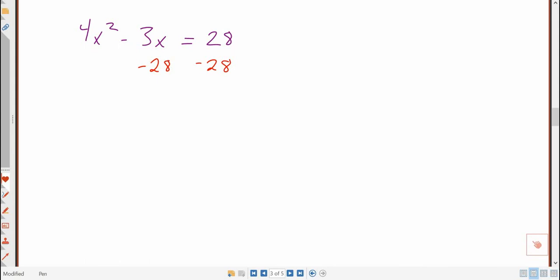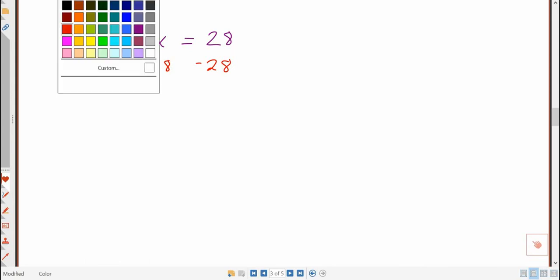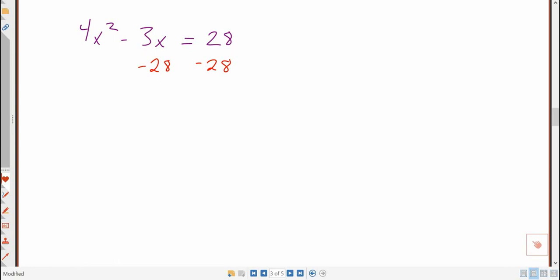Now, be careful. On this left-hand side, when I subtract that, there are no like terms. I can't combine that 28 with either the 3x or the 4x squared because they are not like terms. So I'm just going to have 4x squared minus 3x minus 28 is equal to 0. Now, once I have it to 0, I can set up my stuff for the quadratic formula. So A is 4, B is negative 3, and C is negative 28.